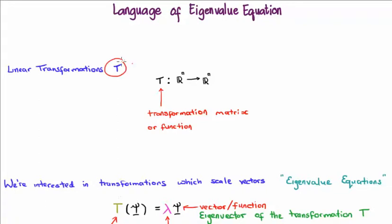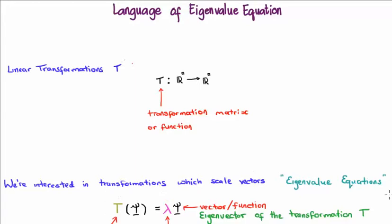Consider the linear transformation T. T is a matrix or a function and it can act on a vector or a function and move it from Rn to Rn — from R2 to R2 for example. Now there are myriad possible transformations which do this, but we are only interested in a very special subset: those which in effect scale the vector or function they act on. These create what is known as eigenvalue equations. Your linear transformation acts on a function or a vector and gives you back the same function or vector but with a multiplicative constant — and if it does this it's known as an eigenvalue equation.